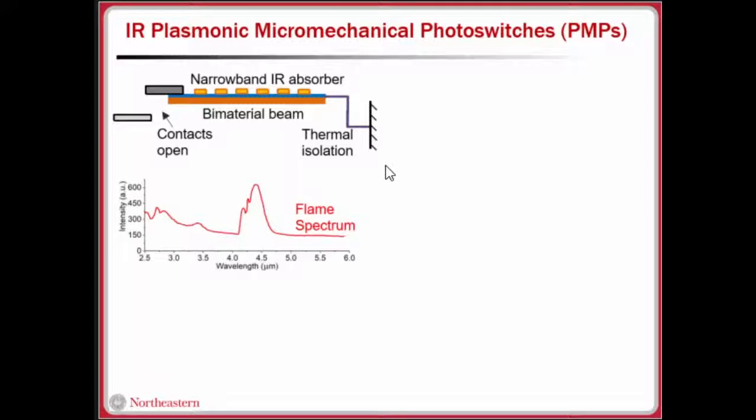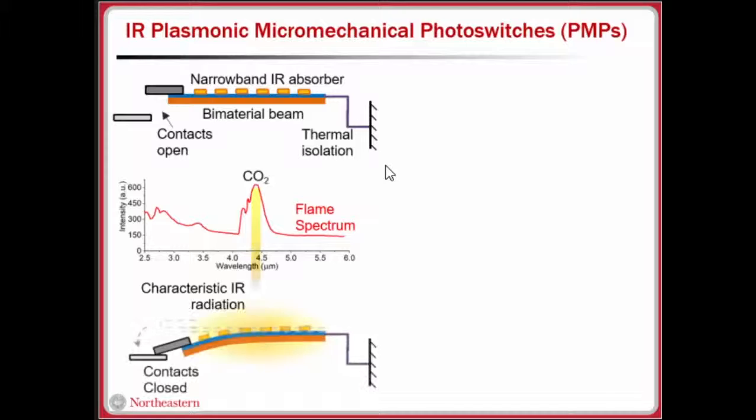Consider an application where we want to detect a flame. The flame has a spectrum such as this, a hydrocarbon flame. It has a prominent peak at around 4.2 micron due to the carbon dioxide content. If we have a device that can detect this 4.2 micron wavelength, the device essentially absorbs that infrared radiation, and the biomaterial beam is heated up.